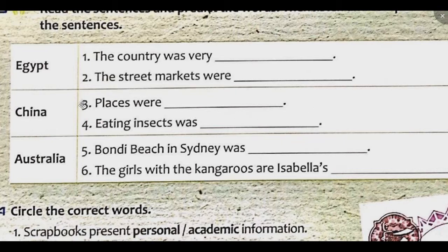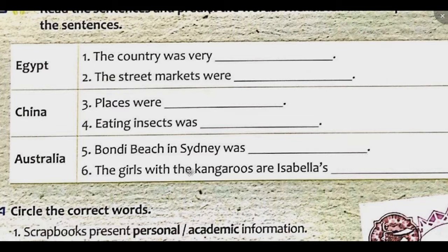The only problem in China was eating insects — they were terrible. Yuck! And finally, Australia. I was at the beaches. Bondi Beach was great. My two little sisters were with kangaroos at the Sydney Zoo. The zoo was really fun.